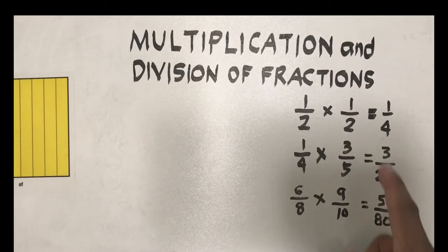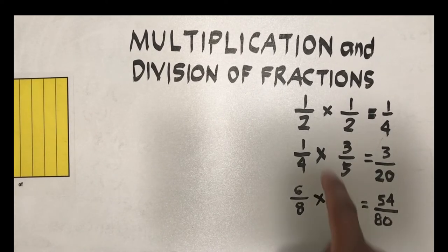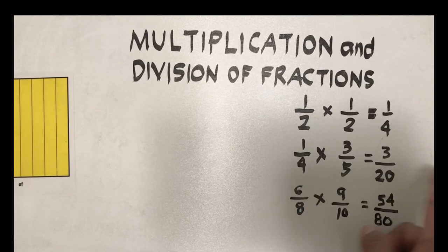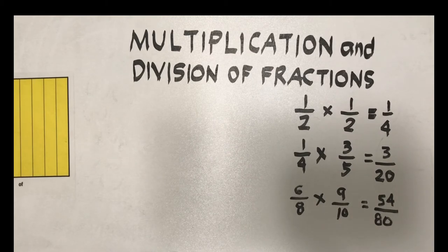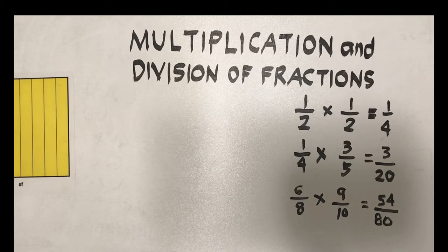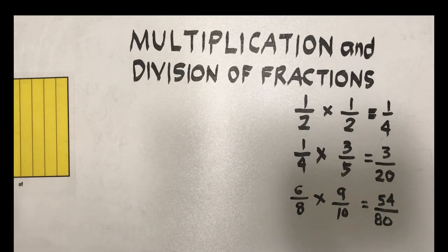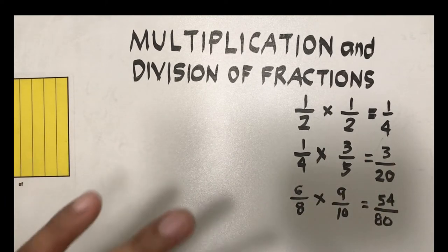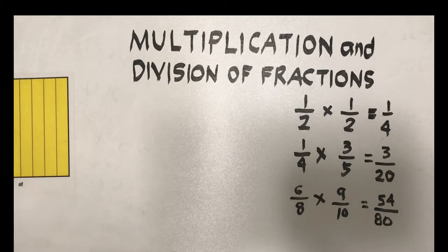Now I would like you to look at our few cases here. We have one-half times one-half equals one-fourth. One-fourth times three over five equals three over twenty. Six over eight times nine over ten equals 54 over 80. Is there any pattern that we can generalize, so that if you apply that rule you can apply it to other multiplication of fraction problems in the future without needing all these manipulatives anymore to visualize?